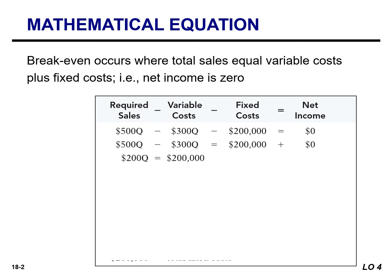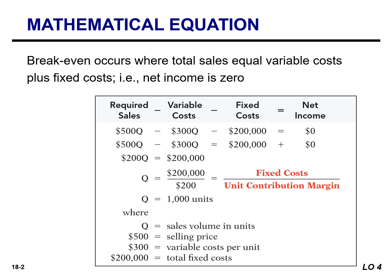The break-even point in units is 1,000. To find the amount of sales dollars required to break even, we simply multiply the units sold at the break-even point — 1,000 units — by the selling price per unit, which is $500, to arrive at $500,000, which is the break-even in sales dollars.